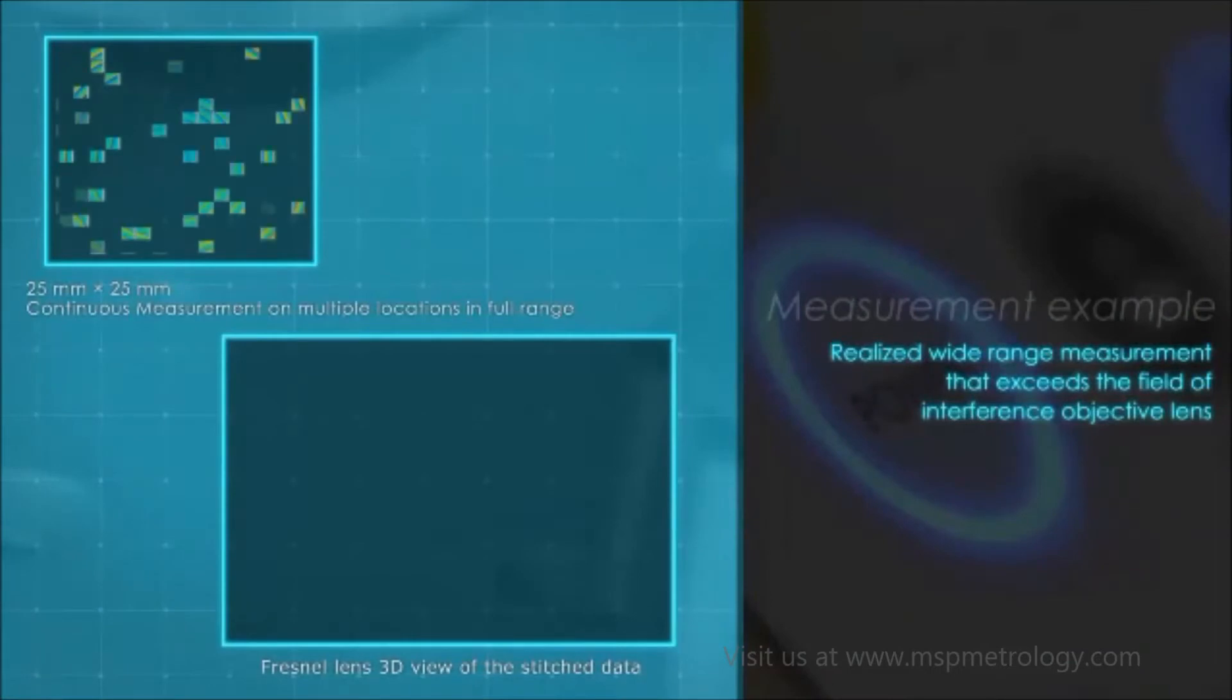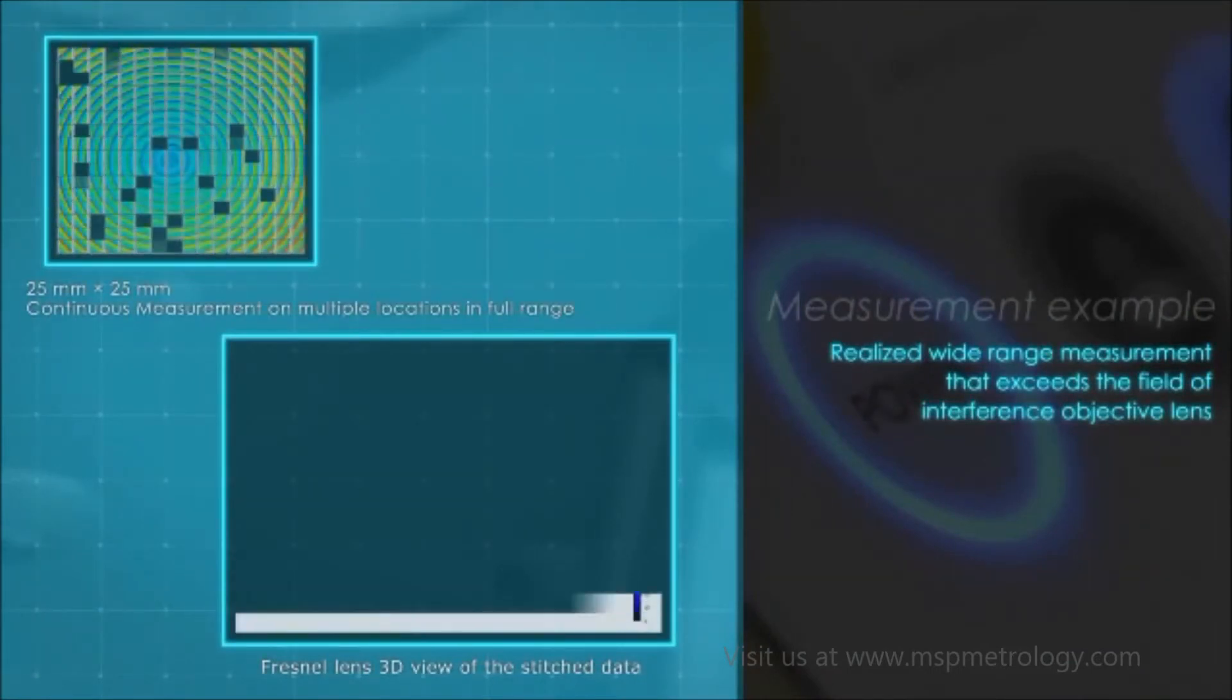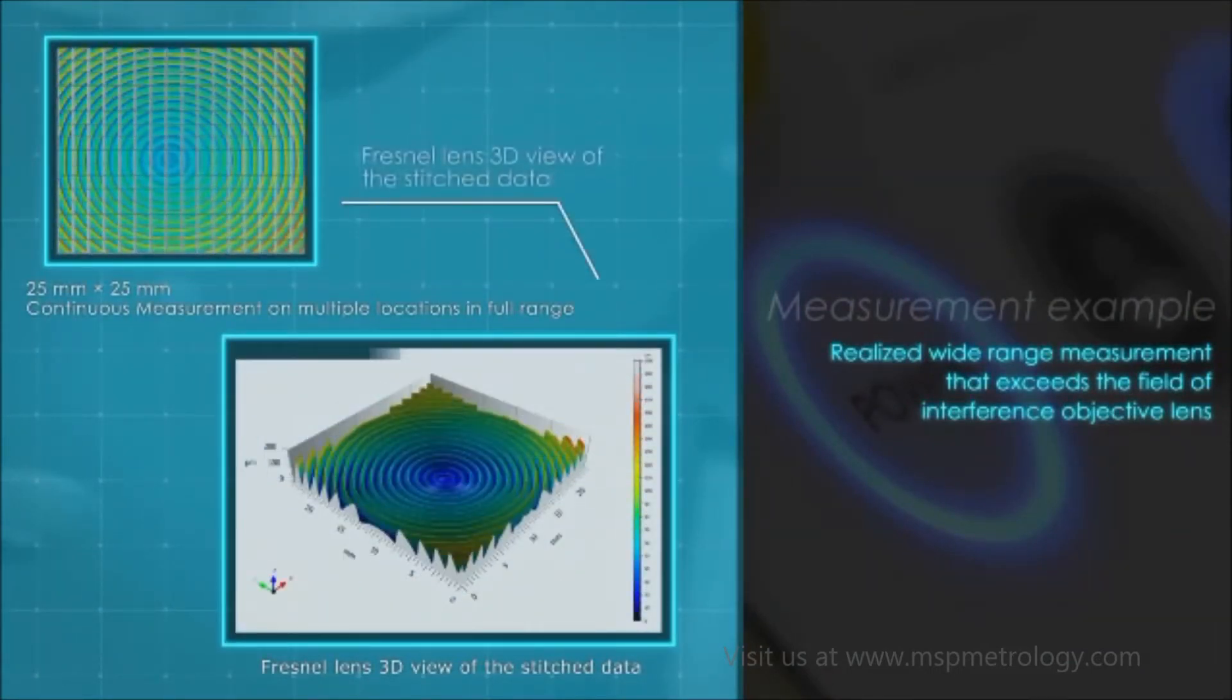This is a measurement example with the Fresnel lens. Utilizing the full travel distance of the 25 by 25mm electric stage, the measurement range exceeds the field of the interference objective lens.